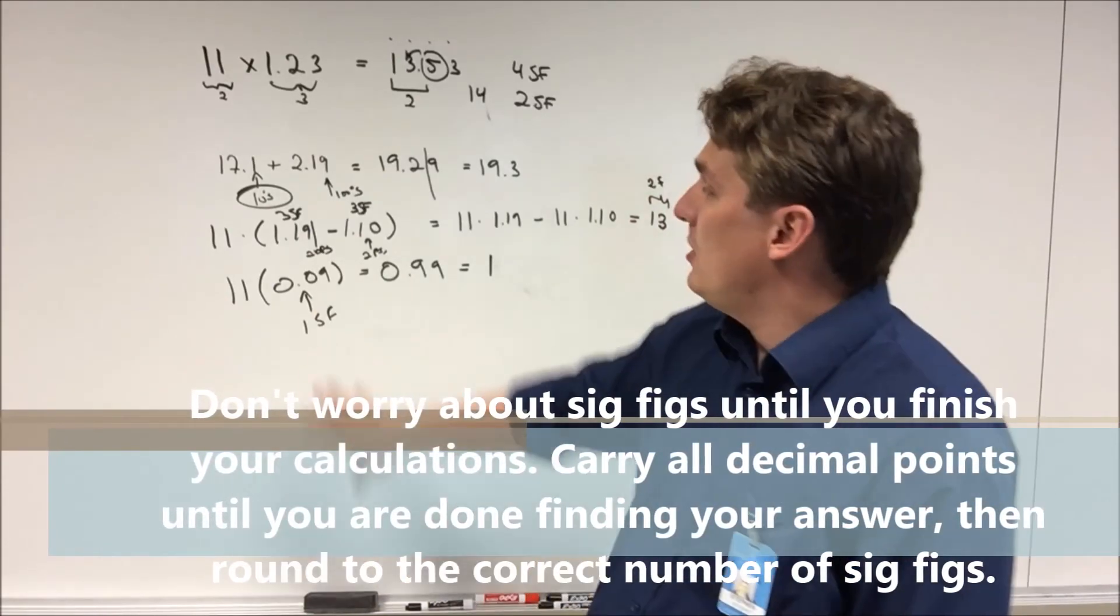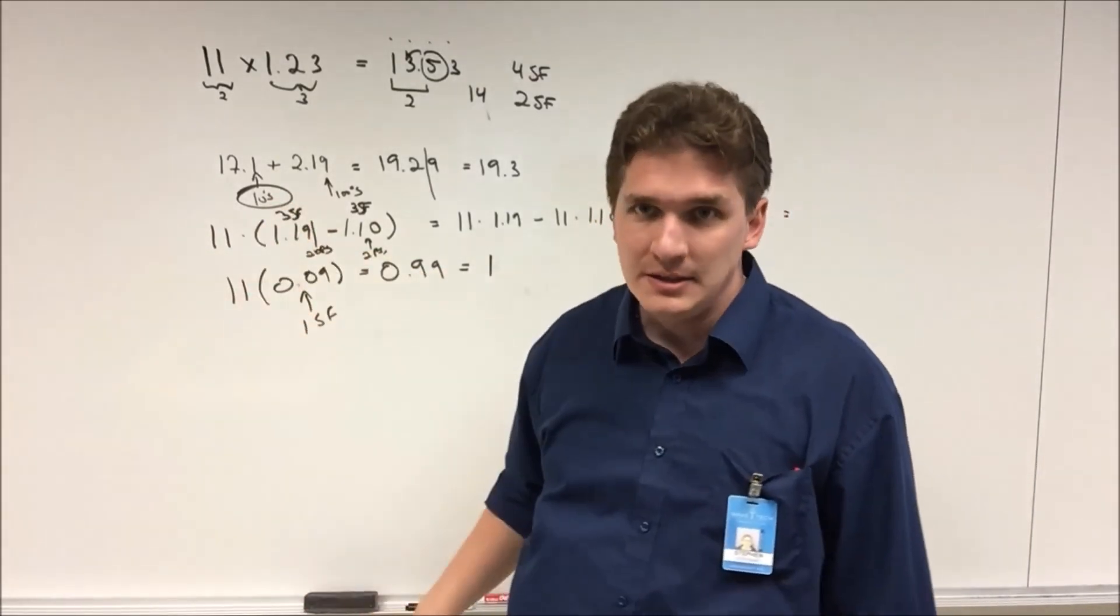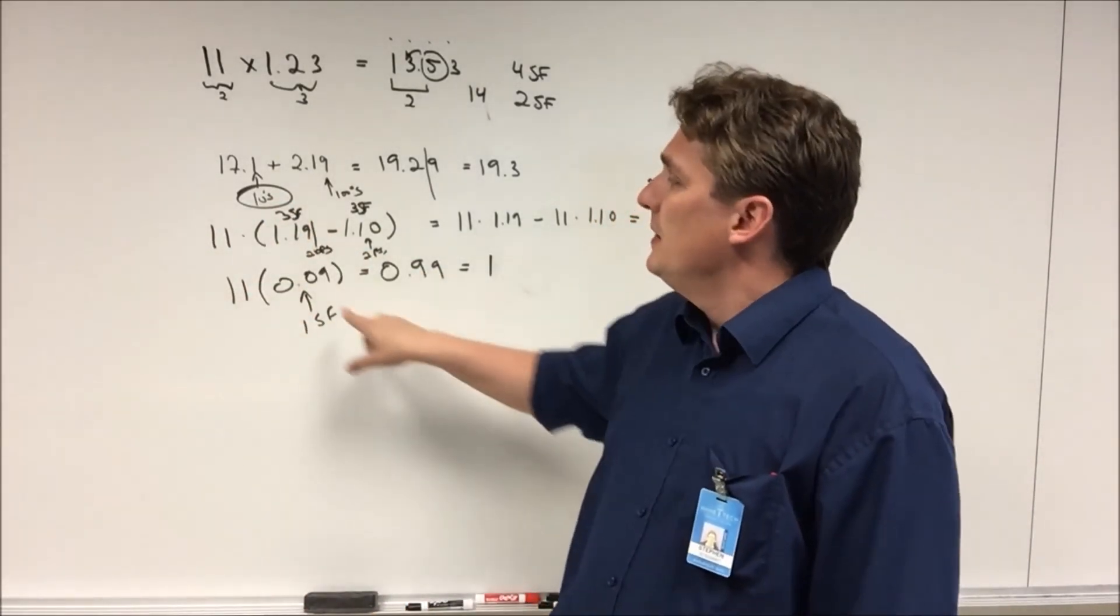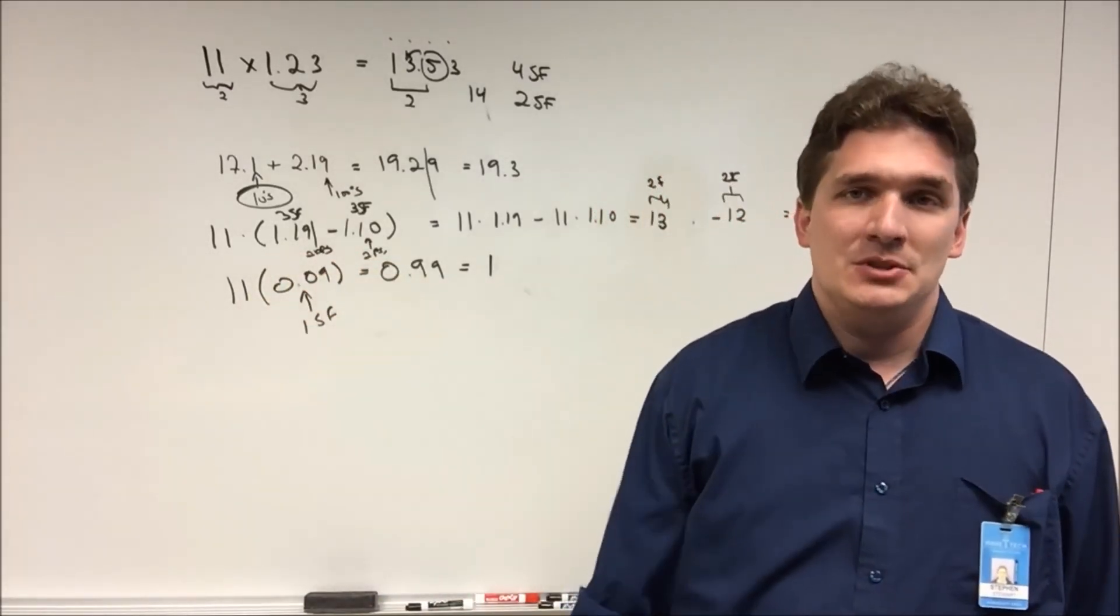I prefer to carry all the decimal points. So don't bother truncating significant figures. Carry out the whole calculation first. Get your answer. Then I would say, based on the sig figs of each of your individual answers, let that set what your answer is.